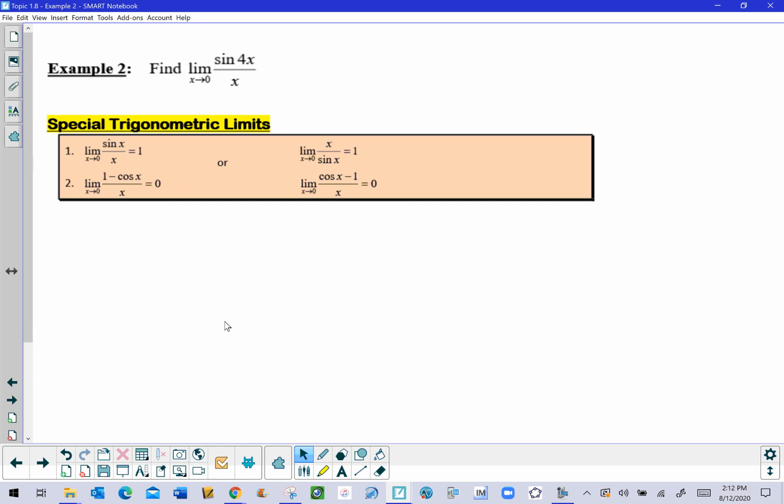So the thing to keep in mind here is that the limit of the sine of x over x as x approaches zero equals one can really take a lot of forms. In other words, the value of x can literally be anything, it can be any variable, it can be any idea.